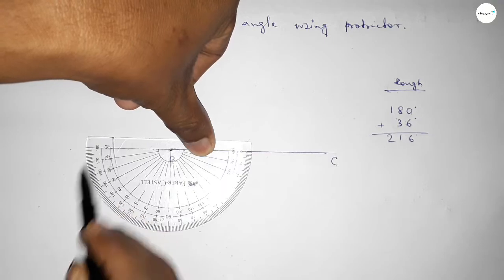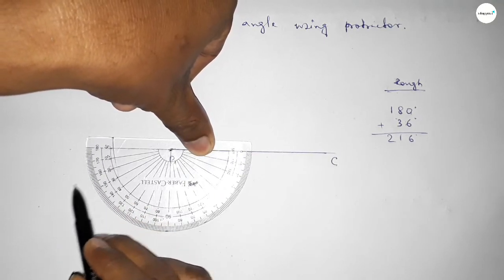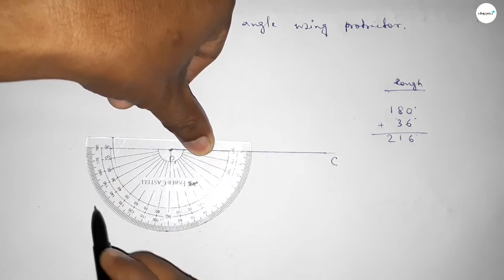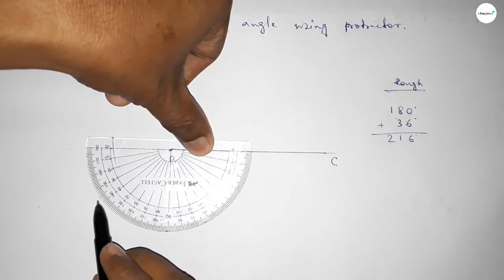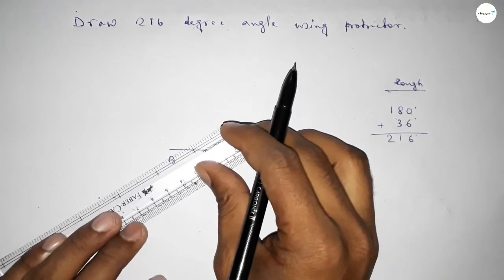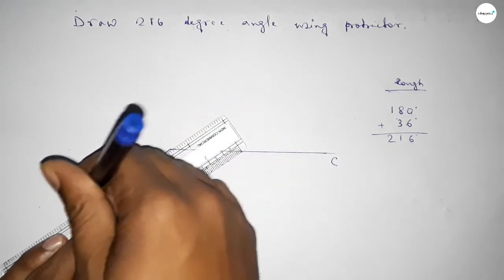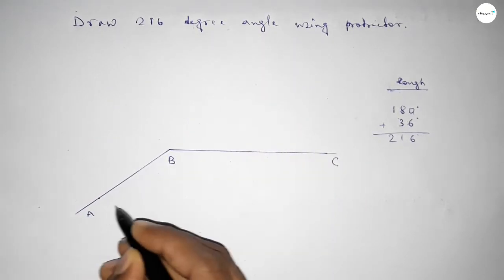So this is 180 degree. Again, this is also starting 0, 10, 20, 30, 35, 36. So by adding 36 degree angle with 180 degree, then we can get 216 degree angle. Now joining this side and taking here a point.